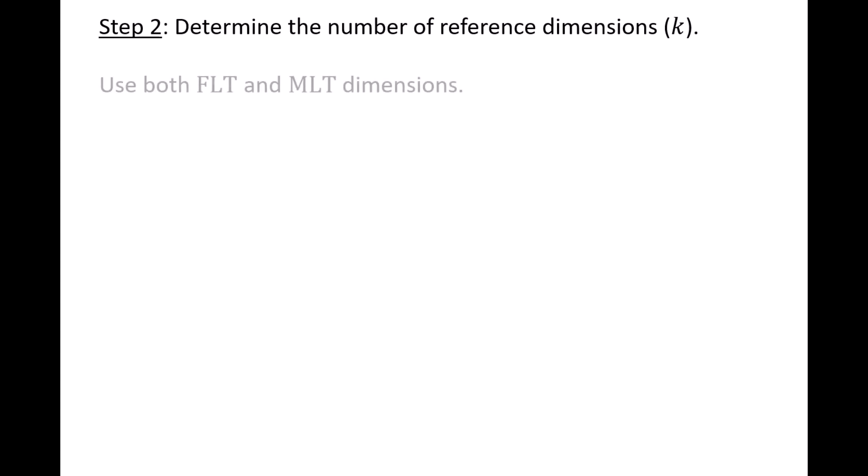Once you have identified the important variables in the system, you can move on to step two, which is where we determine the number of reference dimensions k by expressing each of the variables in terms of their basic dimensions. We will express the basic dimensions of the variables in two ways. We use the dimensions of force, length, and time, which we call the FLT dimensional system, and we also use the dimensions of mass, length, and time, which we call the MLT dimensional system. We can convert between the FLT and MLT systems by noting that force equals mass times acceleration, and acceleration has dimensions of length per time squared. So force F has dimensions of mass M, length L, and time T to the negative 2.